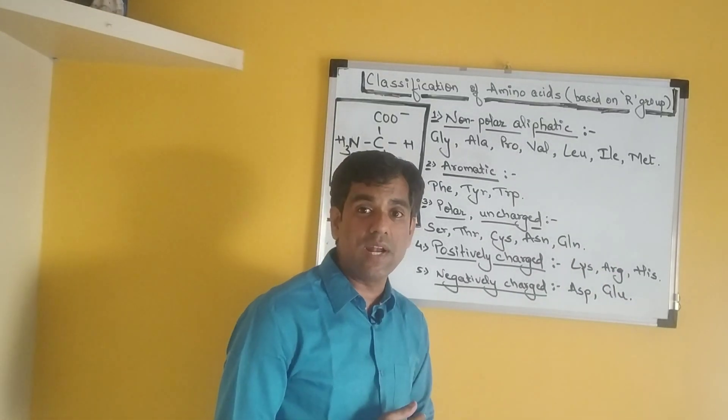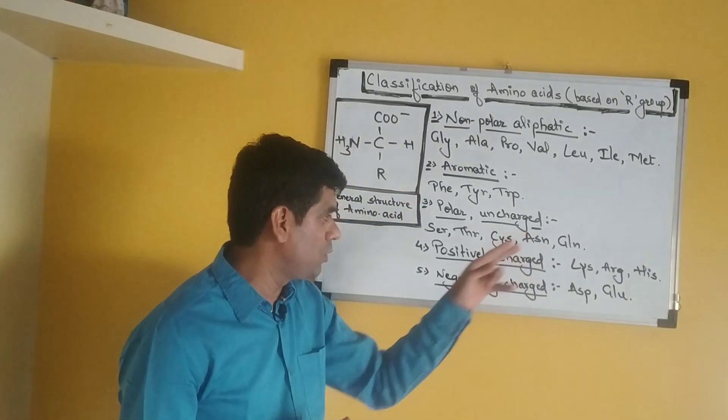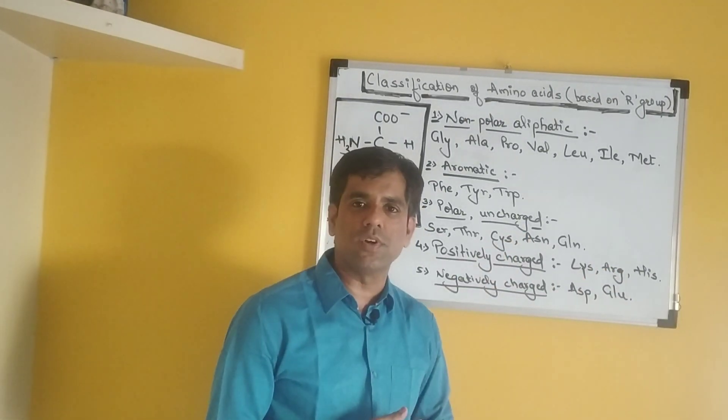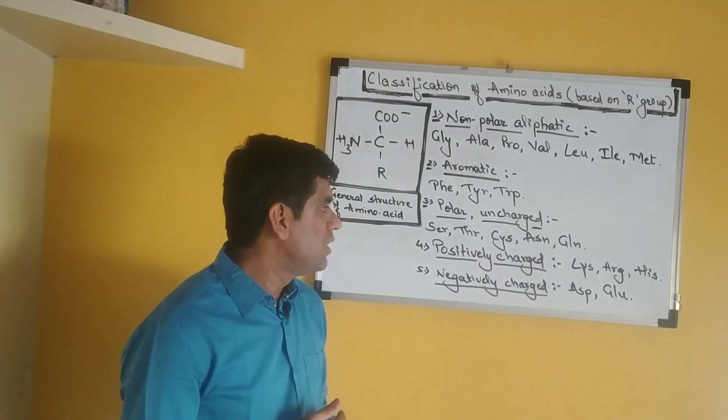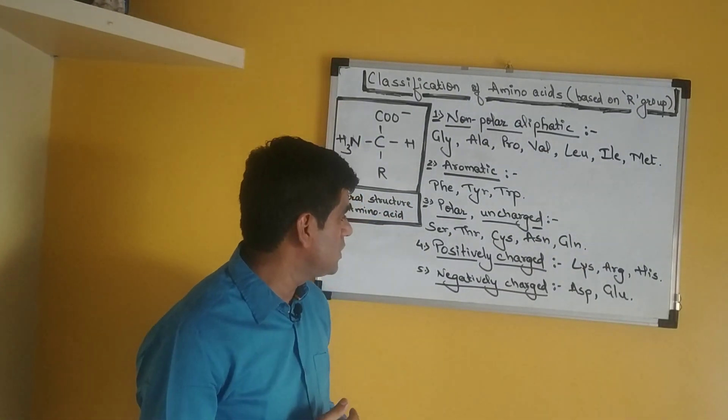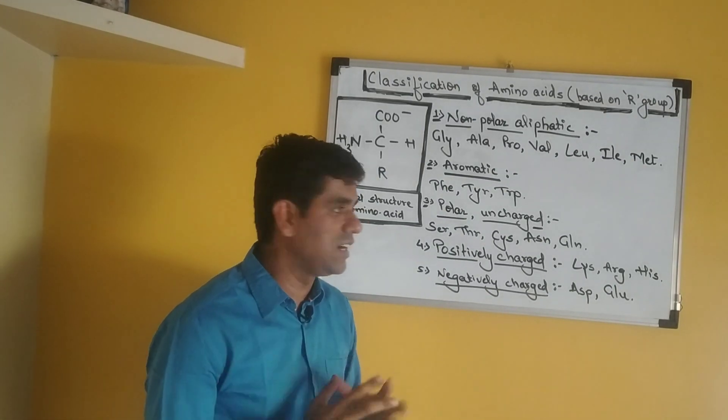Histidine has an imidazole group which provides it a positive charge. Histidine is also famous because it is the amino acid which has a pK near neutrality, and therefore it is more significant in biology.